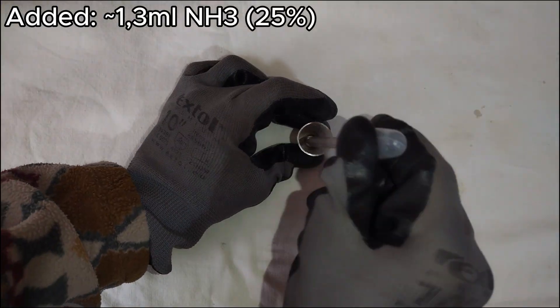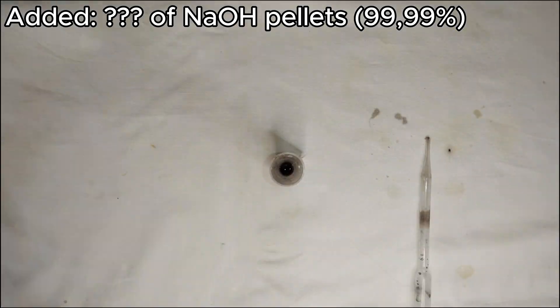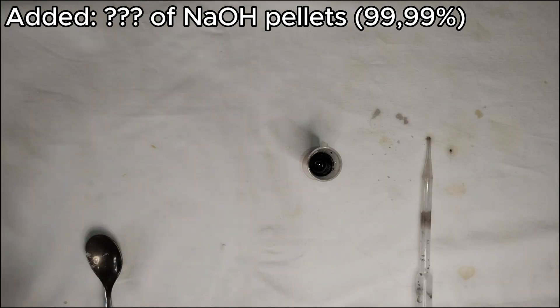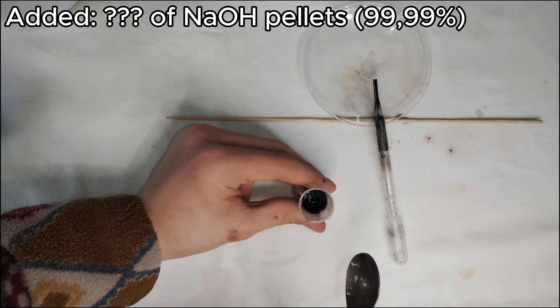I add about 1.3 milliliters of concentrated ammonia solution and about a spoonful of sodium hydroxide. It's very important to add it slowly, otherwise this will happen.